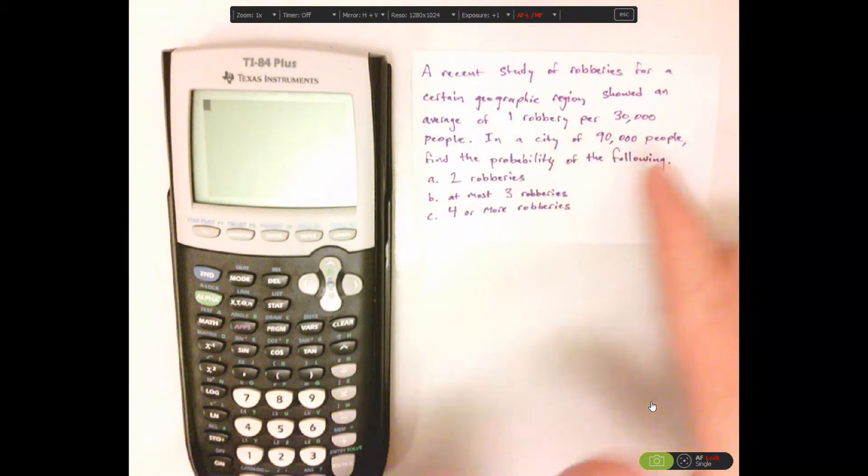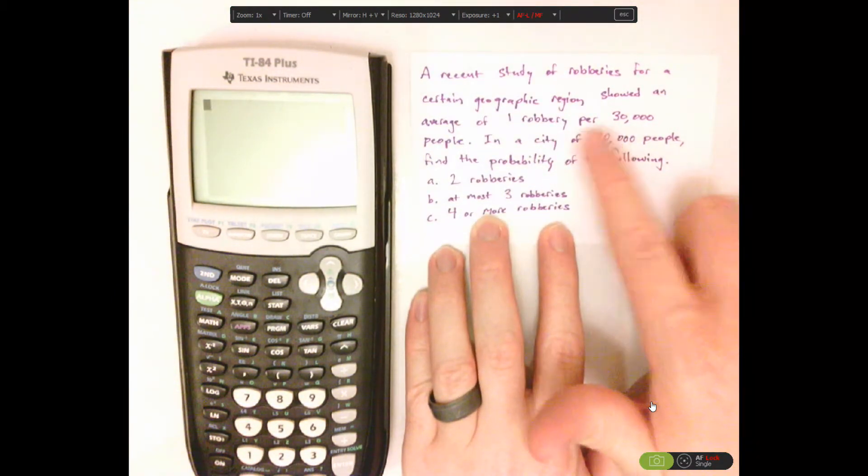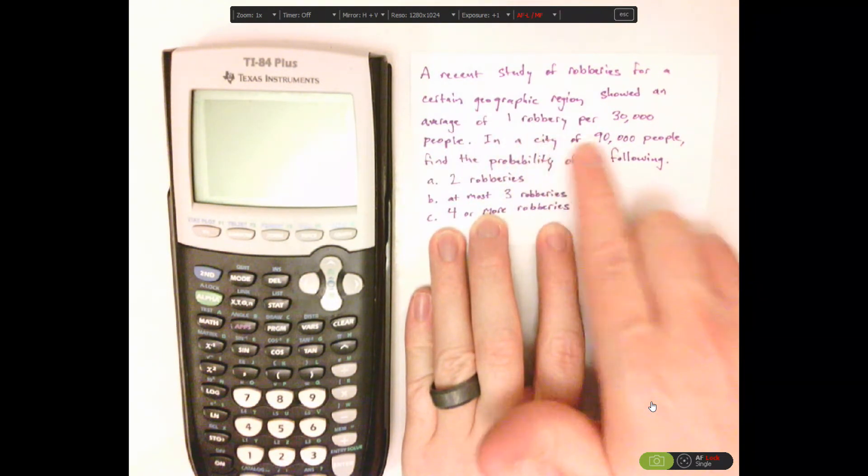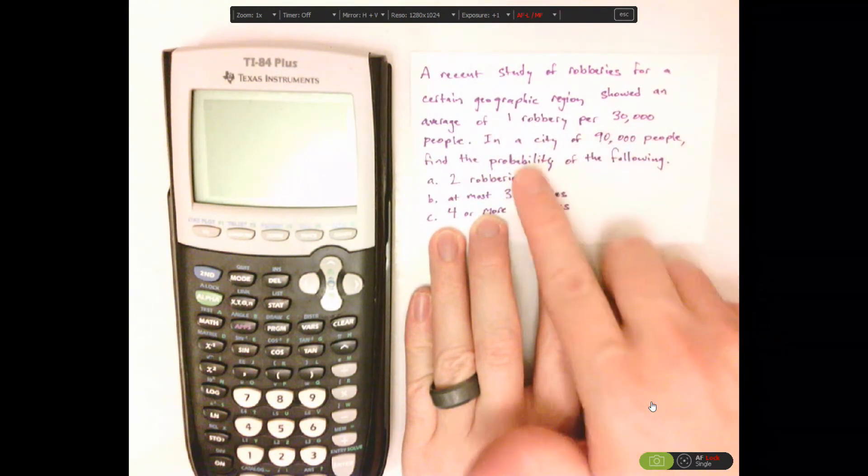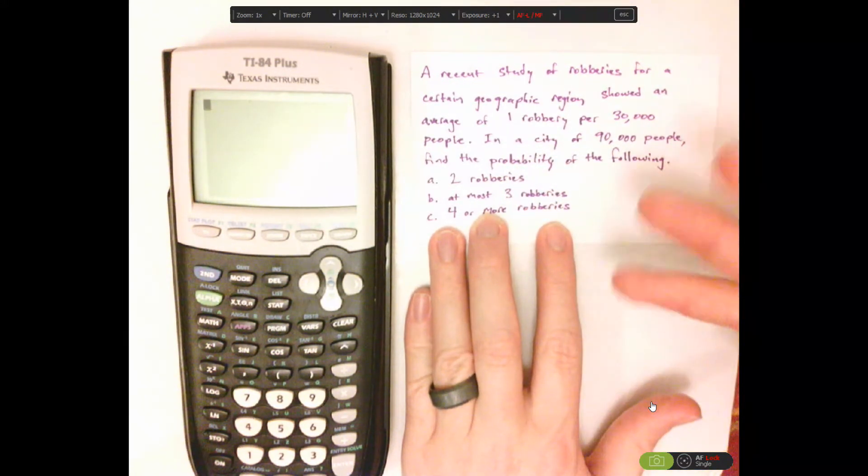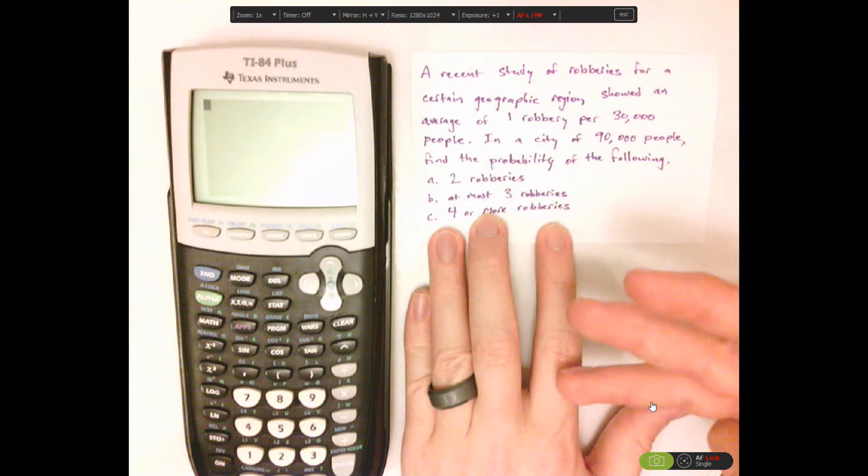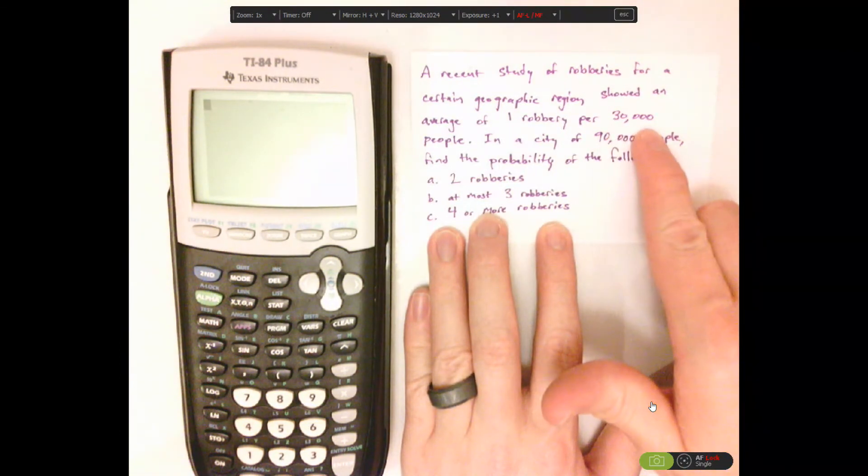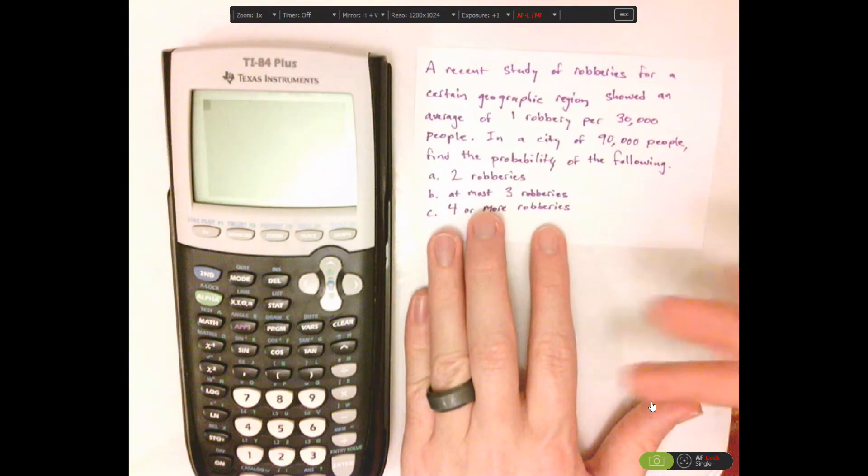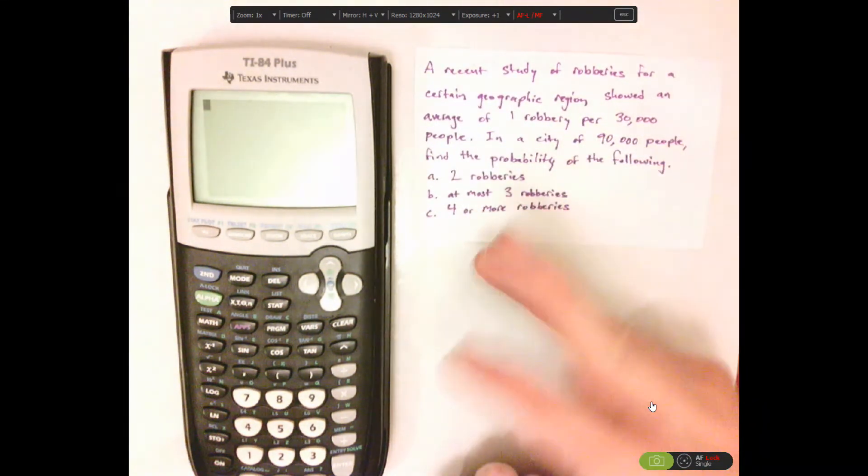So here, the average is going to be a little different because the average of one robbery per 30,000. So in a city of 90,000, it's going to be three because three times 30,000 gives you the 90,000. We know it's one per 30,000, so that would be an average of three.